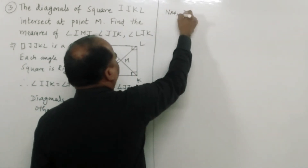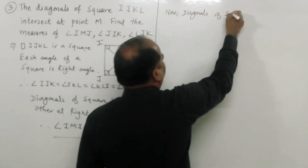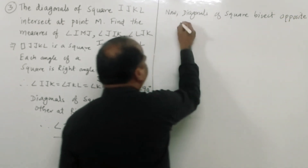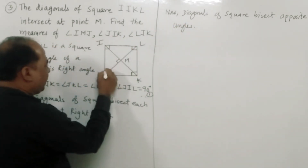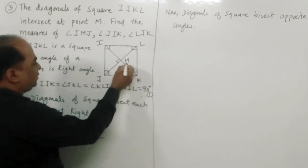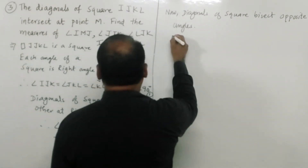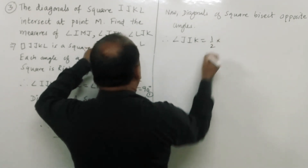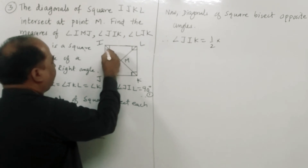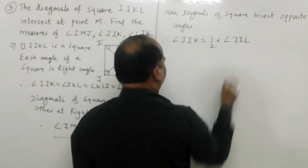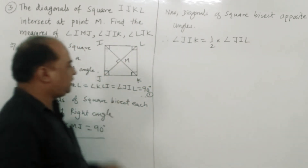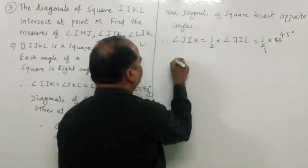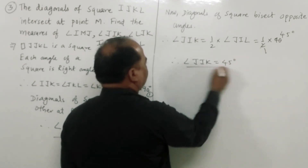By property, diagonals of a square bisect opposite angles. Therefore this 90 degree angle is bisected into two equal parts. Angle JIK is equal to 1/2 of angle JIL, and angle JIL is 90 degrees. Therefore angle JIK is equal to 1/2 into 90, which is 45 degrees.